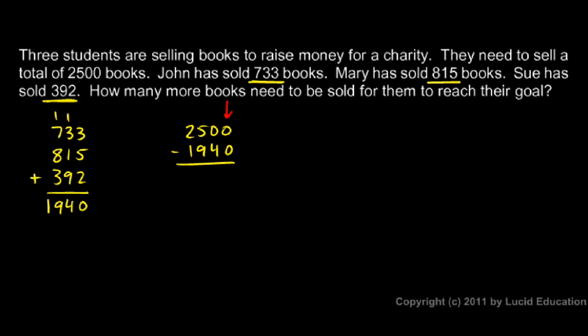So I start here on the right. 0 minus 0 is 0. And then 0 minus 4 I can't do. So I come over to the 5. I cross it out and make it a 4 and stick my 1 right there on the 0. So now I have a 10 right there minus 4. And 10 minus 4 is 6.